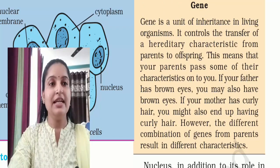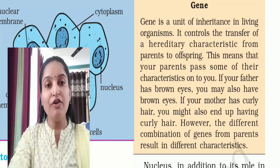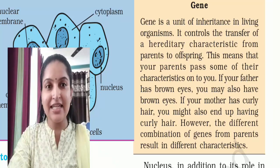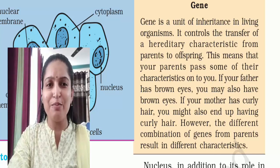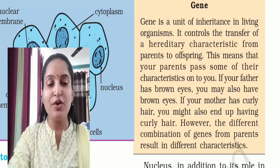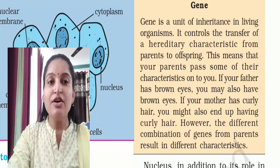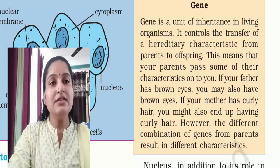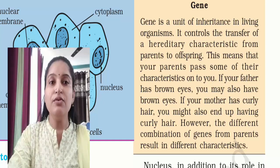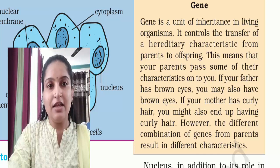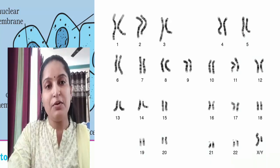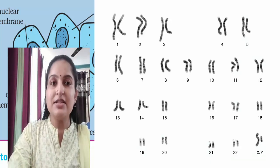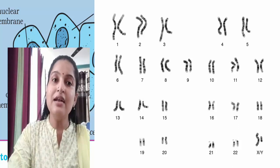A gene is a unit of inheritance in living organisms. Each gene determines one character — eye color, nose shape, mouth, feet, ears, hair, height. Every character has corresponding genes located on chromosomes. It is genes that control the transfer of hereditary characters from parents to offspring. The transfer of genes is what transfers characters from one generation to the next.